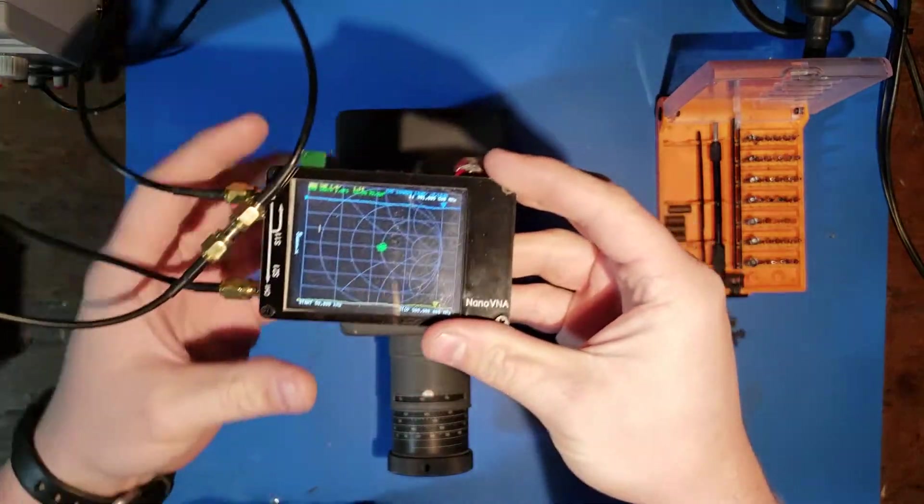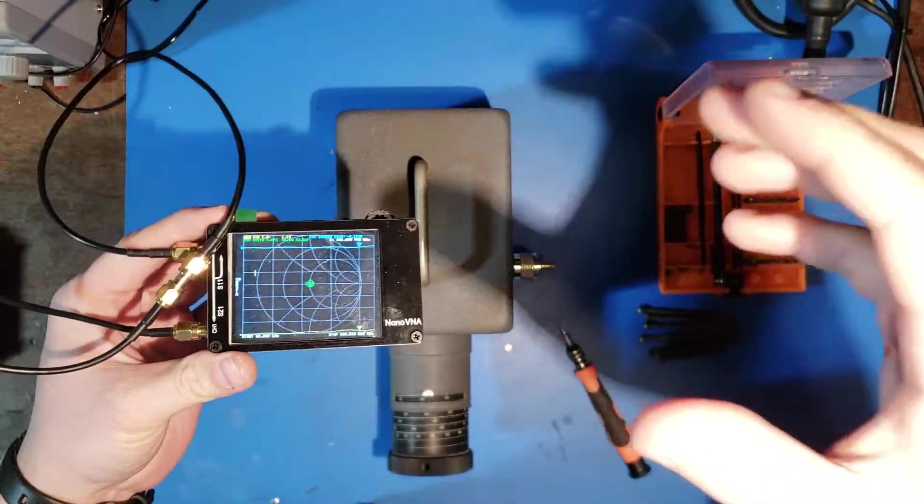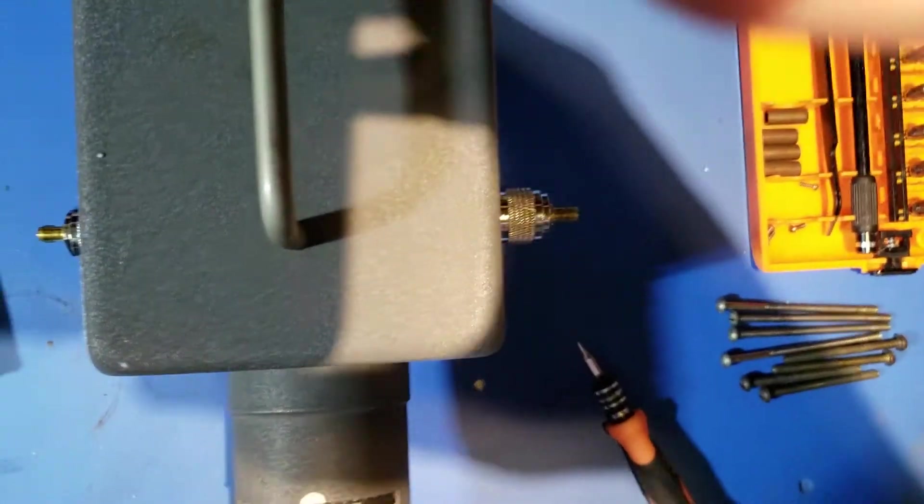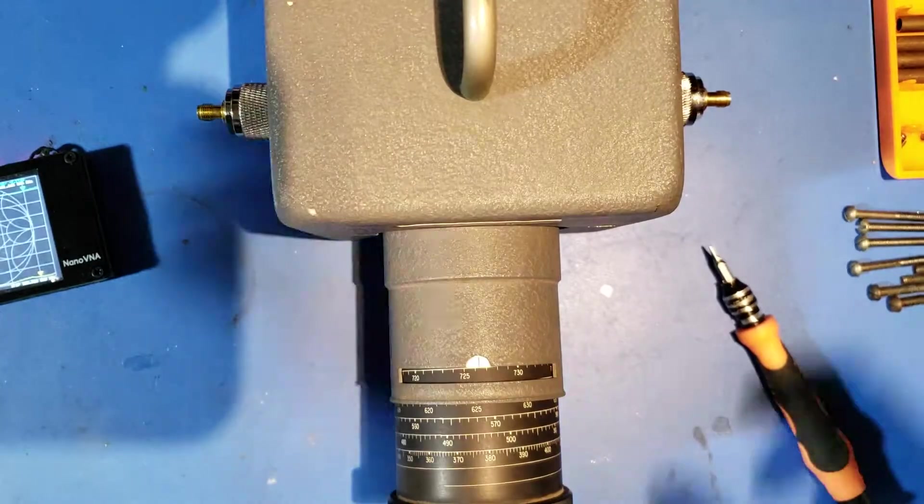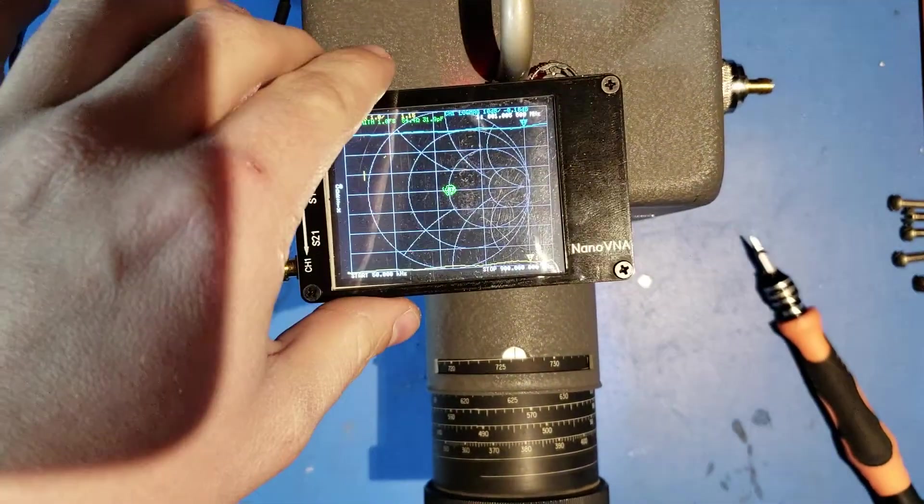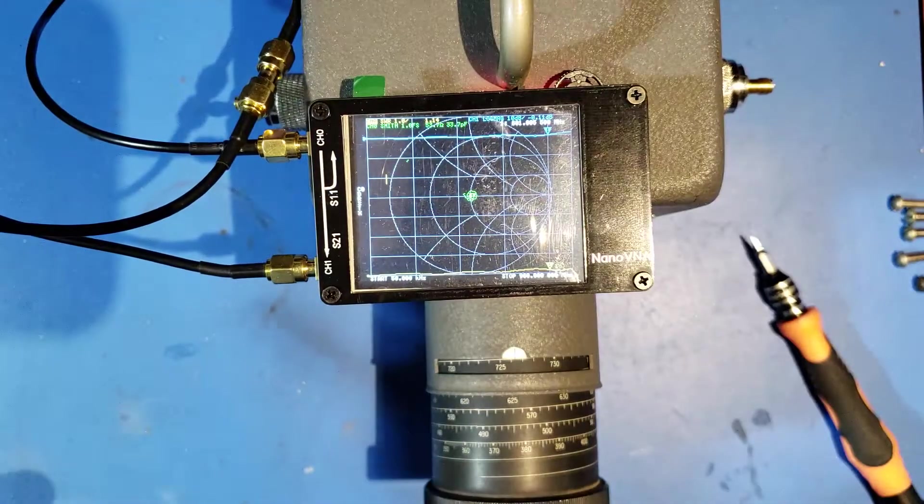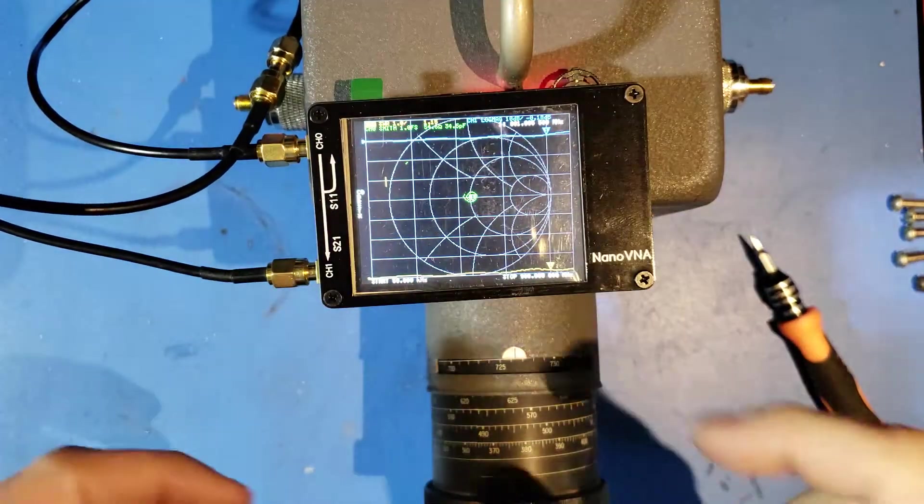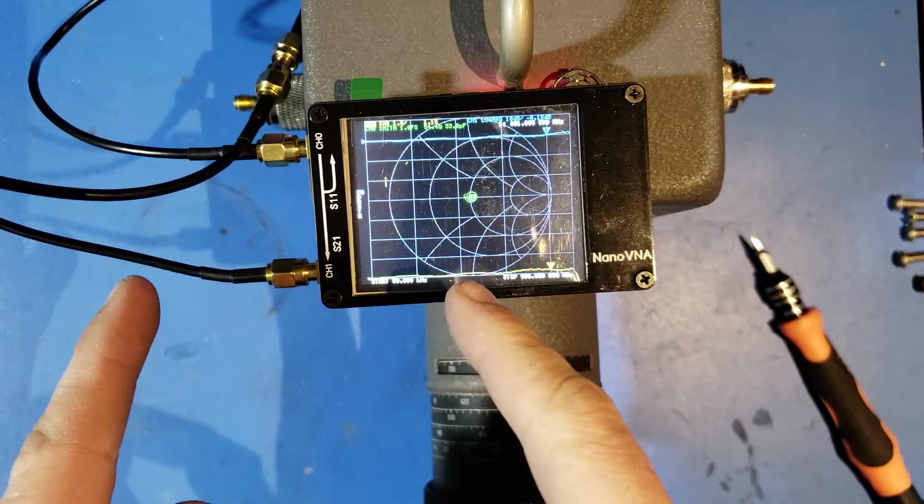So next we want to verify our calibration. Now I did this off camera, I did a SOLT calibration. So we'll just move the camera down further so that you guys can see up close what's going on with the cavity filter and what's going on with the NanoVNA. So here is the NanoVNA. I'll turn that light away, so I don't get as much glare.